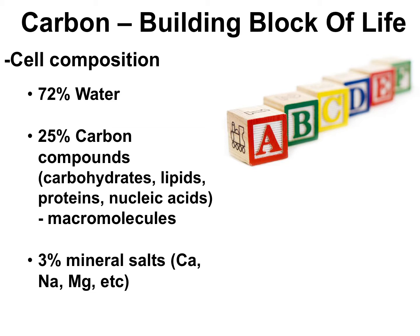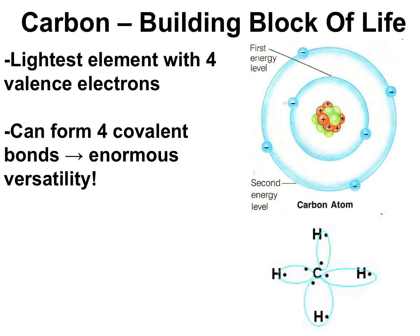But what makes carbon so special? The answer lies in carbon chemistry, and quite simply, carbon's favorable configuration of valence electrons. Carbon is the lightest element with four valence electrons — one, two, three, four. What that means is, to get to the stable octet of eight valence electrons, carbon can form four covalent bonds with up to four different molecules. And this is huge in terms of carbon's versatility.